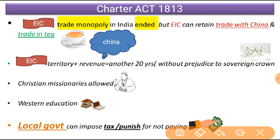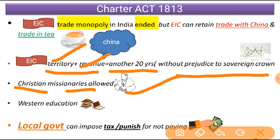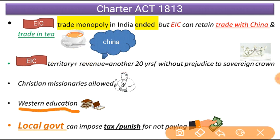East India Company can retain their territory and revenue for another 20 years, without prejudice to the sovereign Crown. They had to assert the sovereignty of the Crown — that they are just below the British Crown. Christian missionaries were also allowed to come and preach their religion. Now Western education: the British territories were asked to spread Western education, and one lakh rupees would be allocated for literature and science within British territories. Also, local government can impose tax and punish for not paying.